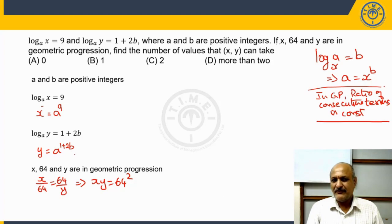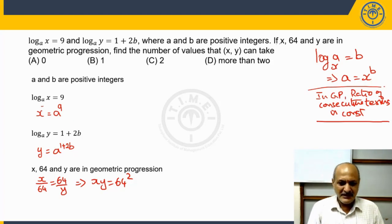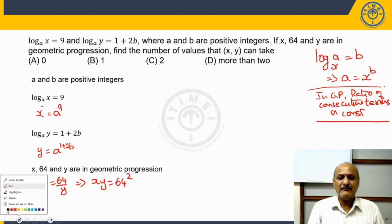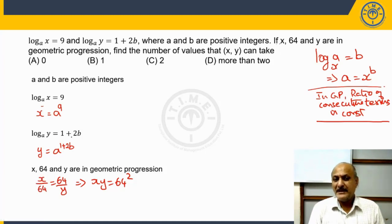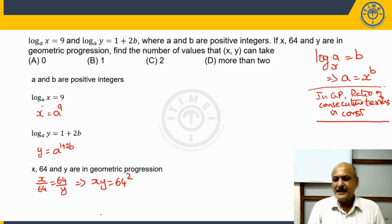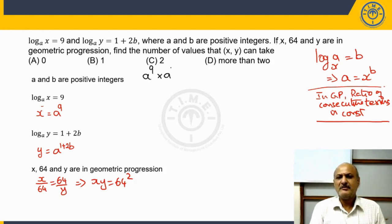We already know x and y in terms of a and b. So we are going to substitute those into the equation x·y = 64 squared. Substituting the values of x and y from the first two parts, we get: a raised to the power of 9, multiplied by a raised to the power of (1 plus 2b), equals 64 squared.